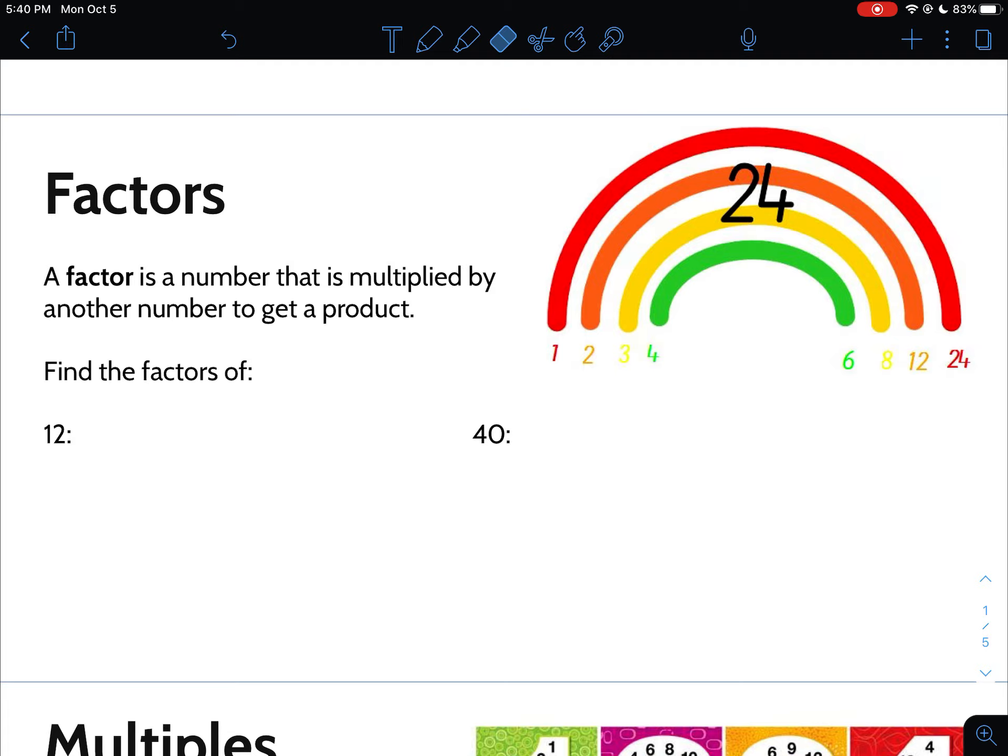Just a little review of what factors and multiples are. A factor is a number that is multiplied by another number to get a product. A product is just an answer to a multiplication problem.